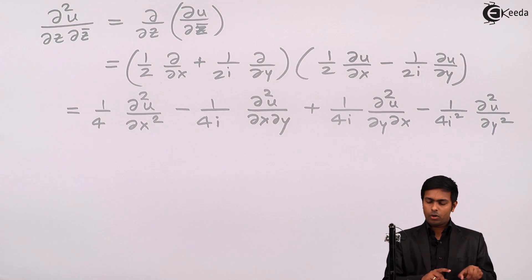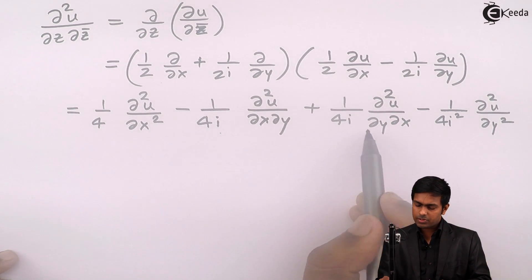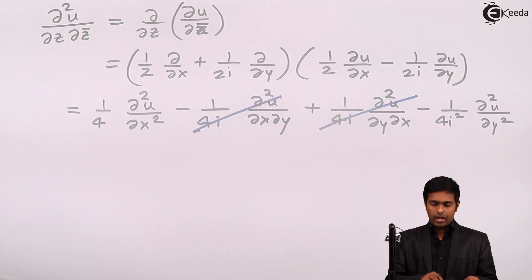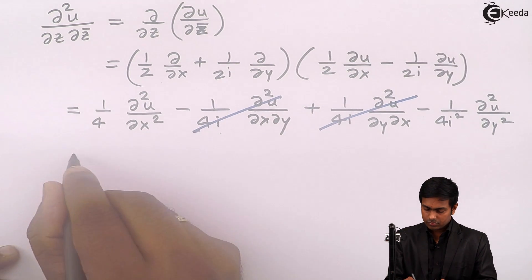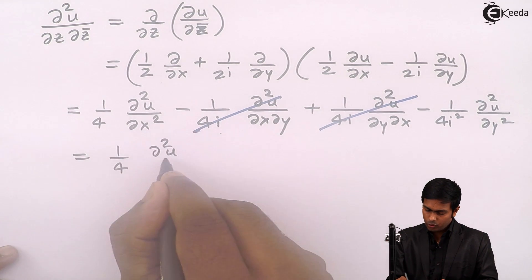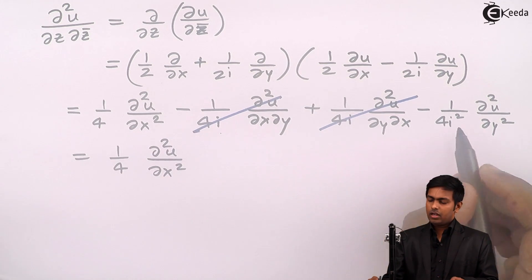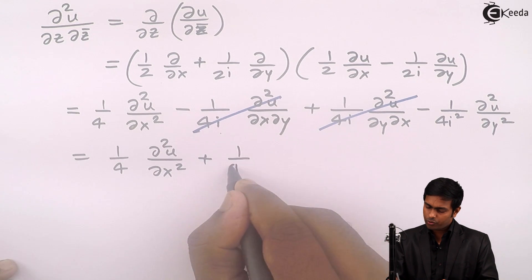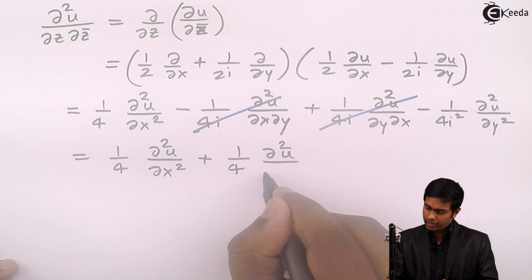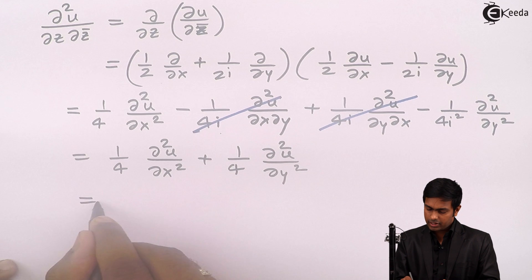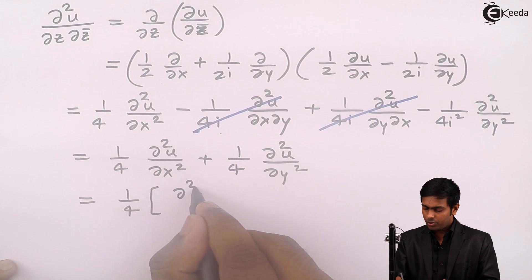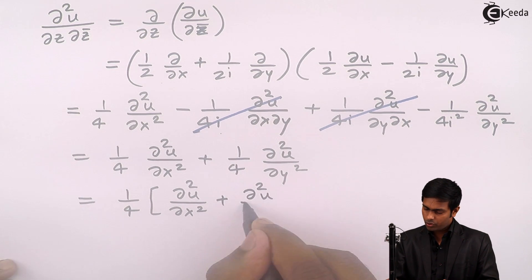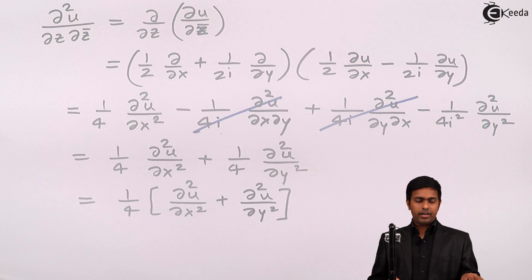Observing the result, the two middle cross-derivative terms are equal and opposite in sign, so they cancel. We are left with (1/4)(∂²u/∂x²) and since i² = -1, the last term becomes +(1/4)(∂²u/∂y²). Therefore, ∂²u / ∂z ∂z̄ = (1/4)[∂²u/∂x² + ∂²u/∂y²].